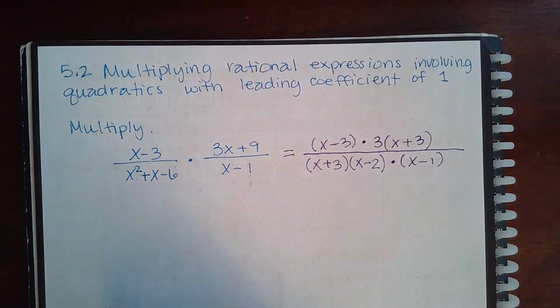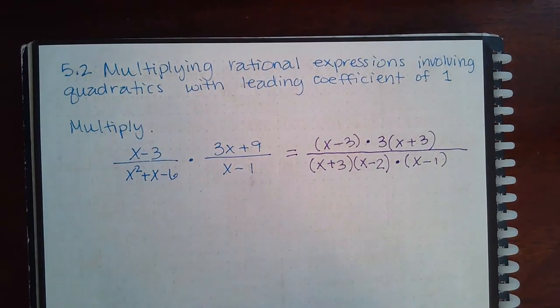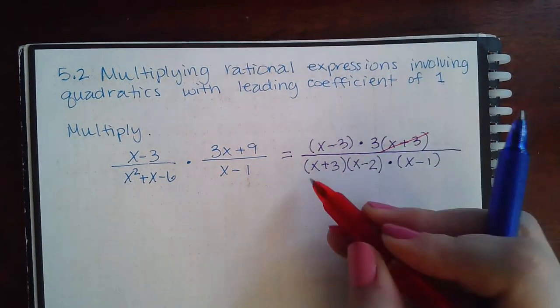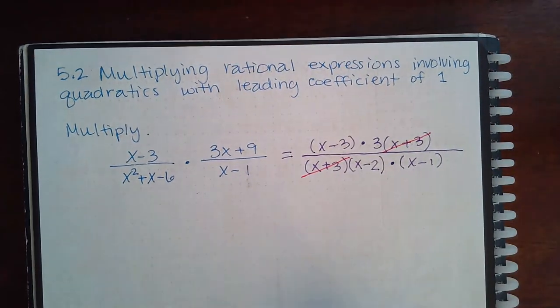Then from there, you're just going to reduce. So I noticed that I have an x plus 3 factor the same here and here, and so those are going to reduce.